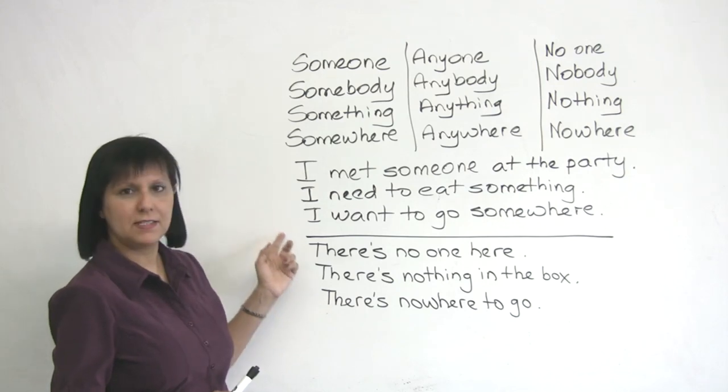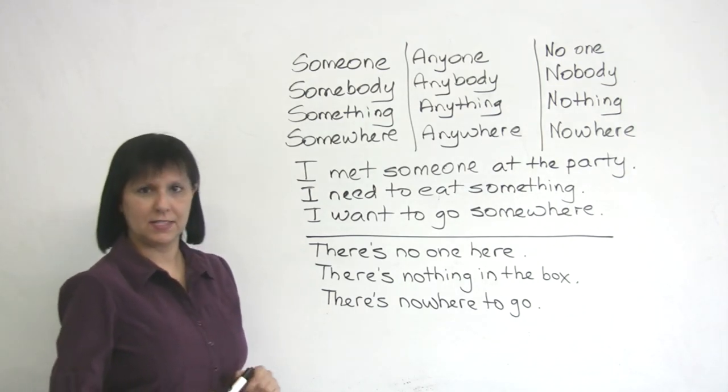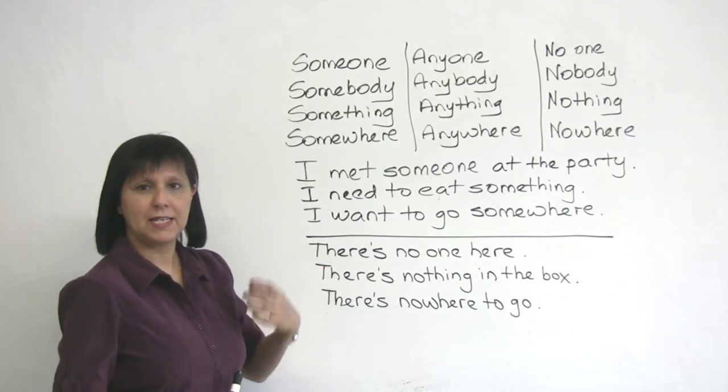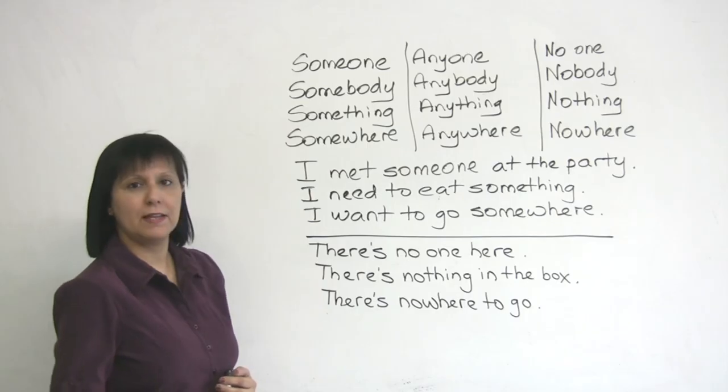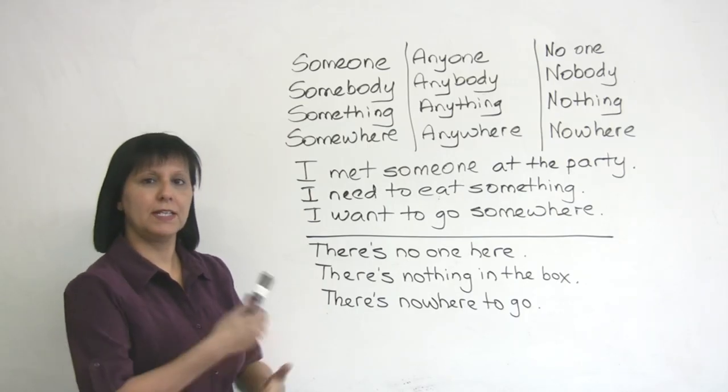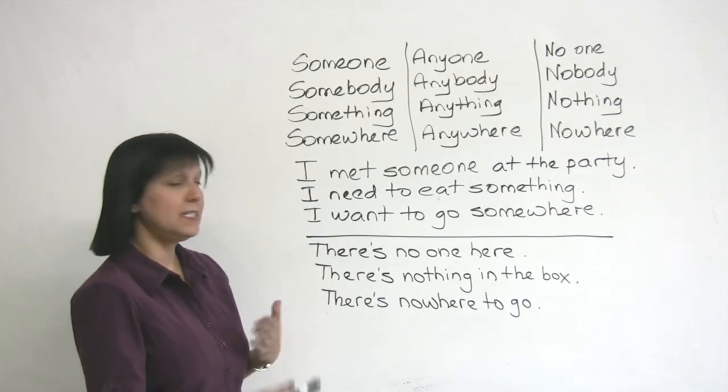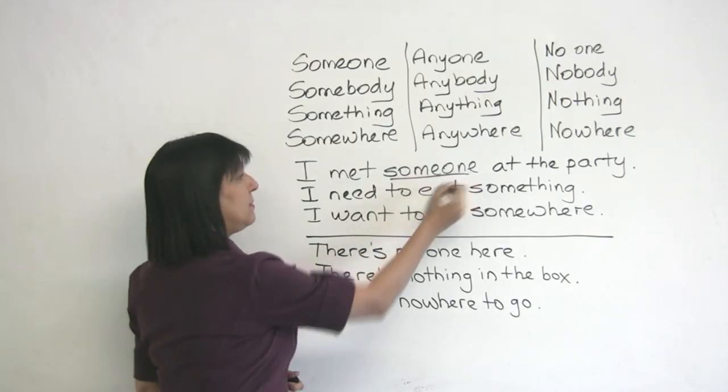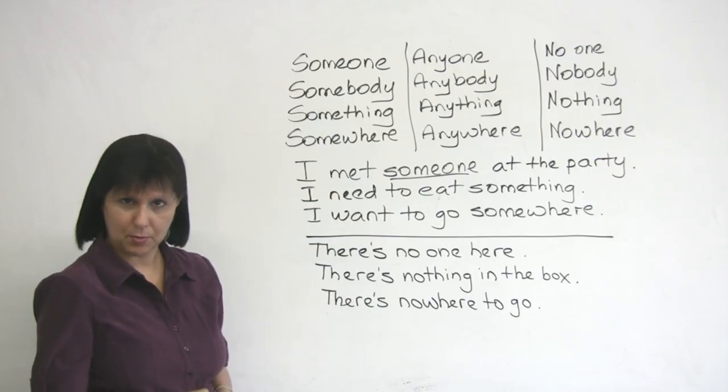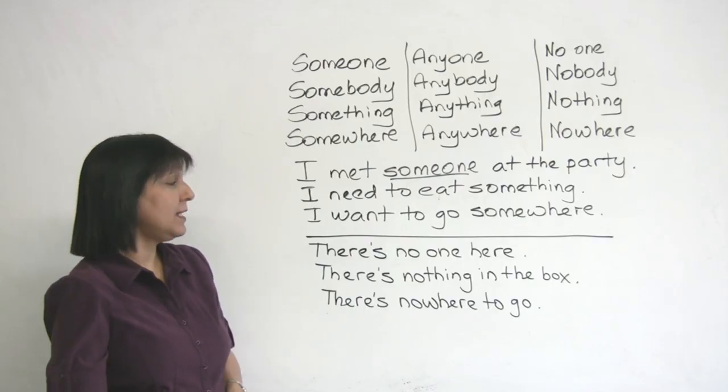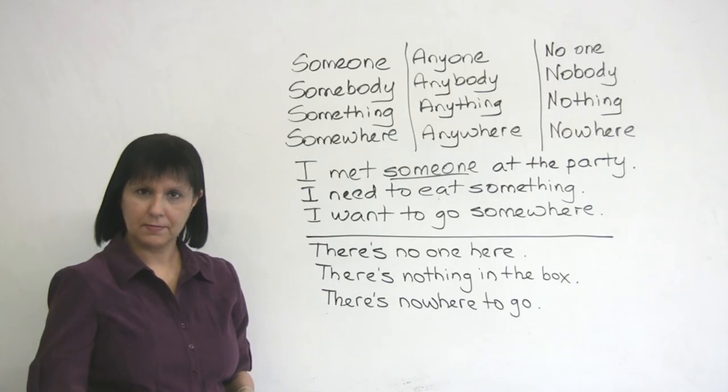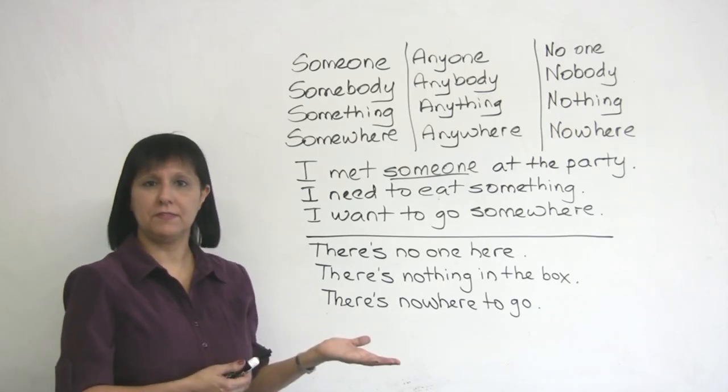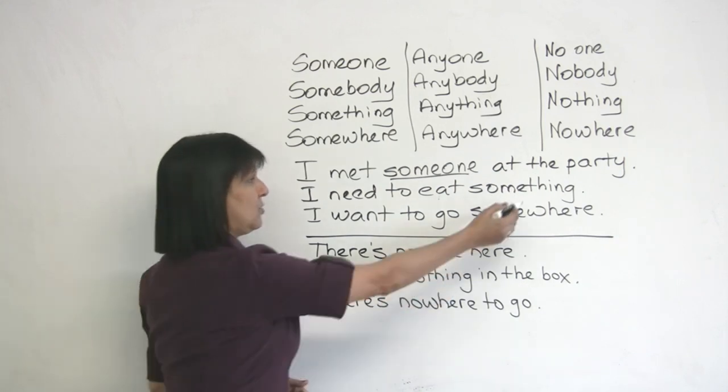Now let's take these sentences and turn them into negative sentences and see how we replace the some word with an any word. I met someone at the party. If we make it negative, we say, I didn't meet anyone at the party. I need to eat something, if we make it negative, is, I don't need to eat anything. Again, this word will change.